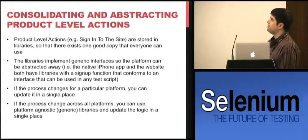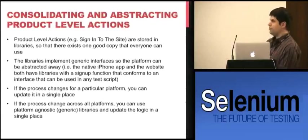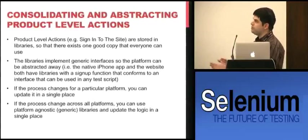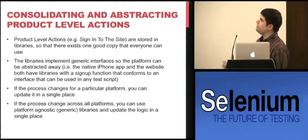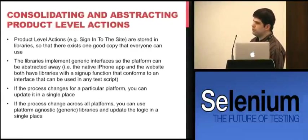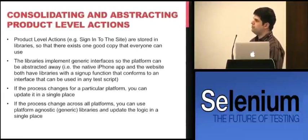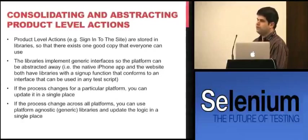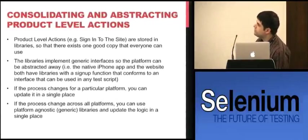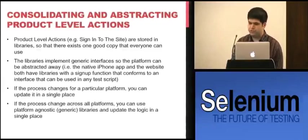The second recommendation: consolidate and abstract product-level actions like sign-in into a single good copy everyone can use that handles any scenario, because you frequently don't know if you'll get the A or B sign-in. These libraries implement generic interfaces so the platform can be abstracted away — we can treat an iPhone app the same as a Facebook app or website. If the process changes for a particular platform, you update it in that platform's library, and the interface abstracts it away from the tests.